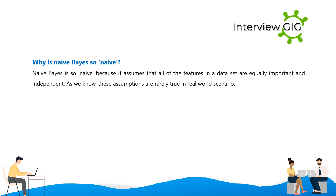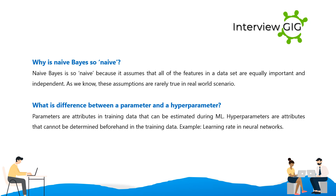Why is Naive Bayes so naive? Naive Bayes is so naive because it assumes that all of the features in a dataset are equally important and independent. As we know, these assumptions are rarely true in real-world scenarios.